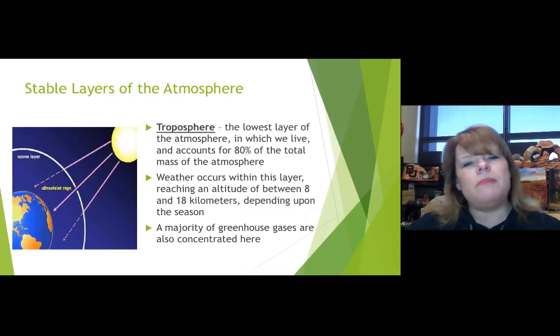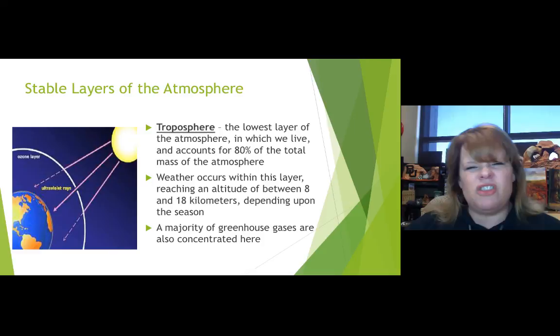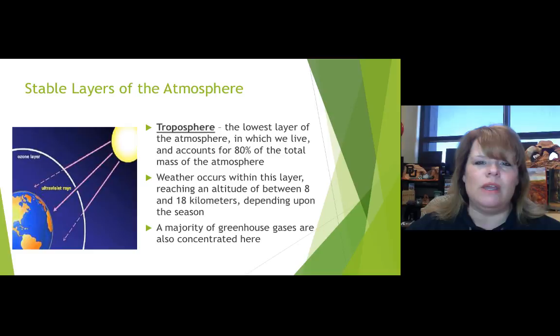The thickness of the troposphere depends on where you are — for example, on top of Mount Everest versus sea level — and also on the season. This is where we have a majority of our greenhouse gases, and we continually emit greenhouse gases into this atmosphere layer as well.